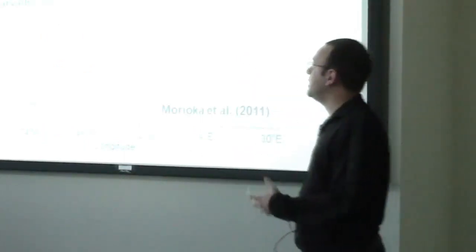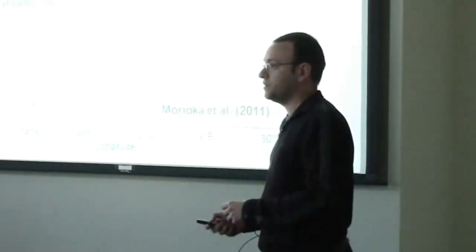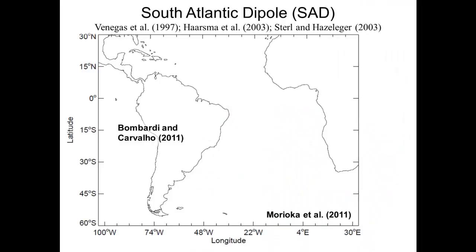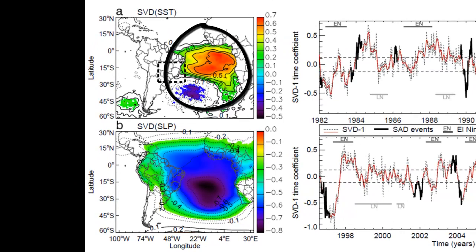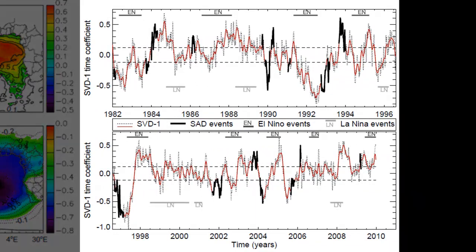So for my PhD, I wanted to understand what are the mechanisms in this relationship. This talk is about SAD events. I use a multivariate analysis called singular value decomposition to characterize this SAD. I use sea surface temperature as a measurement of the ocean and sea level pressure as a measurement of the atmosphere. The analysis gives me a dipole for the ocean and a monopole for the sea level pressure, and it also gives me a time index where I could select events when the SAD is strongly positive or strongly negative.